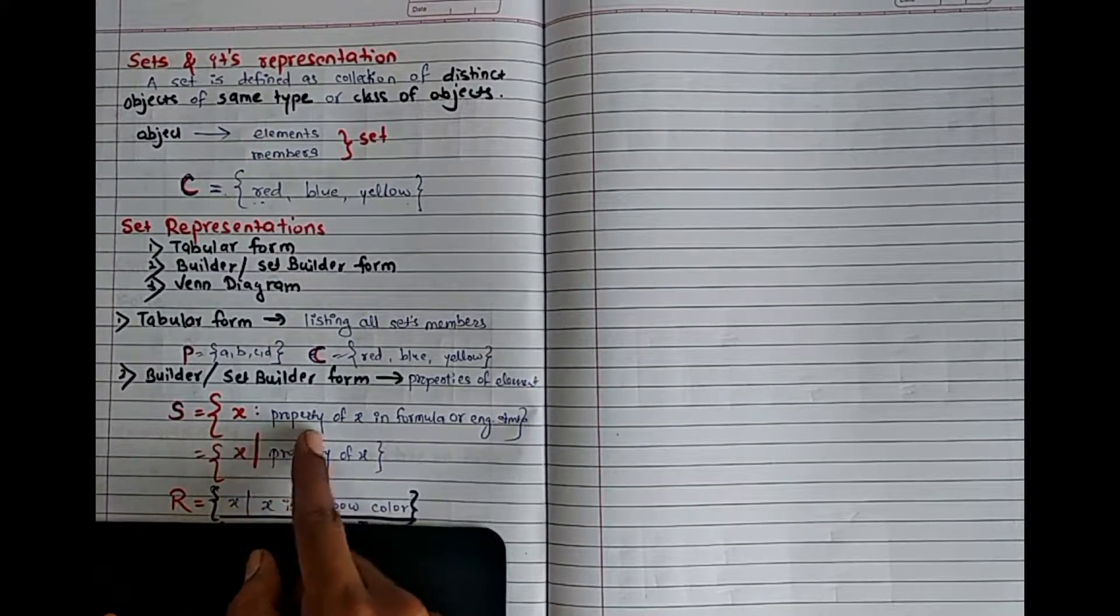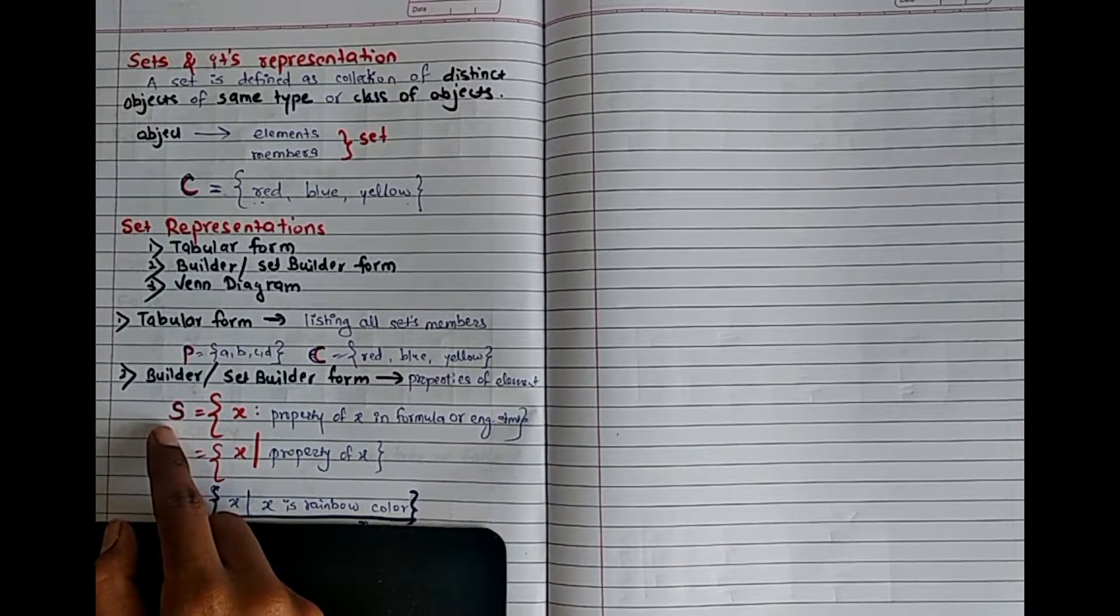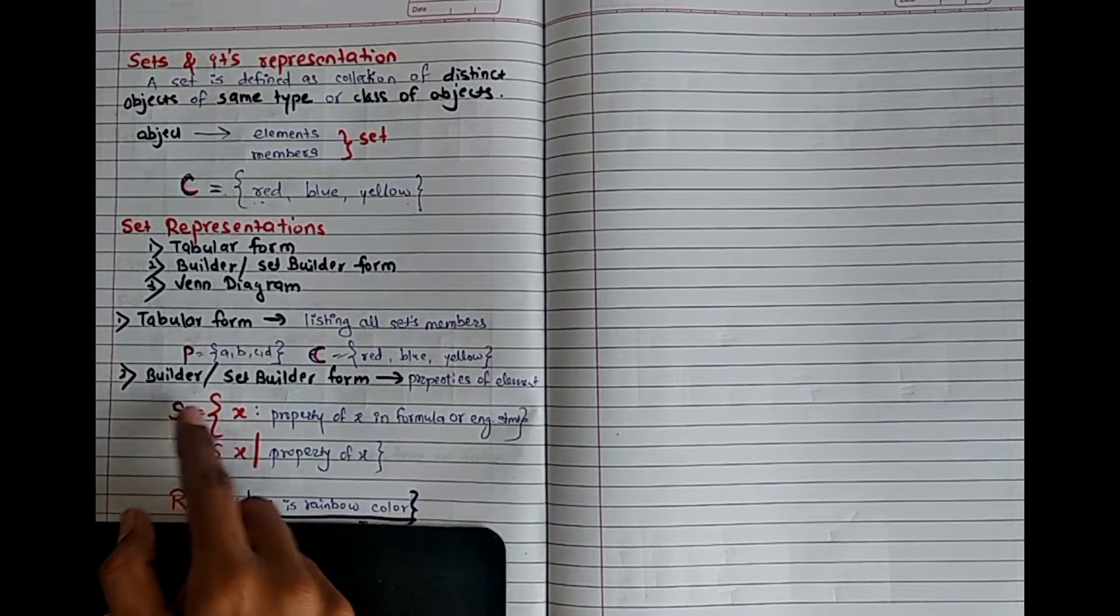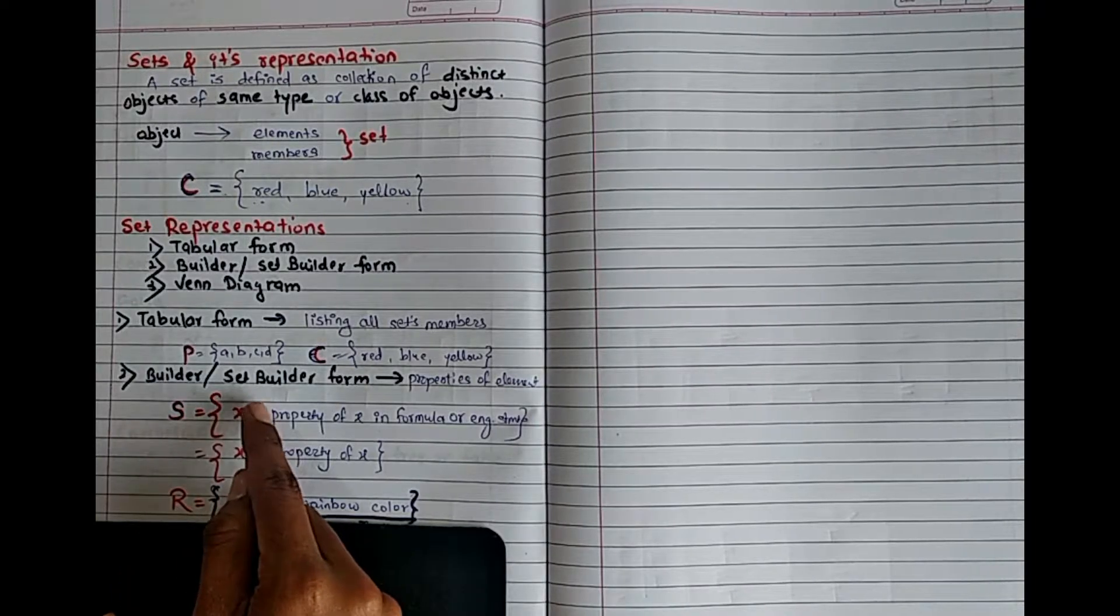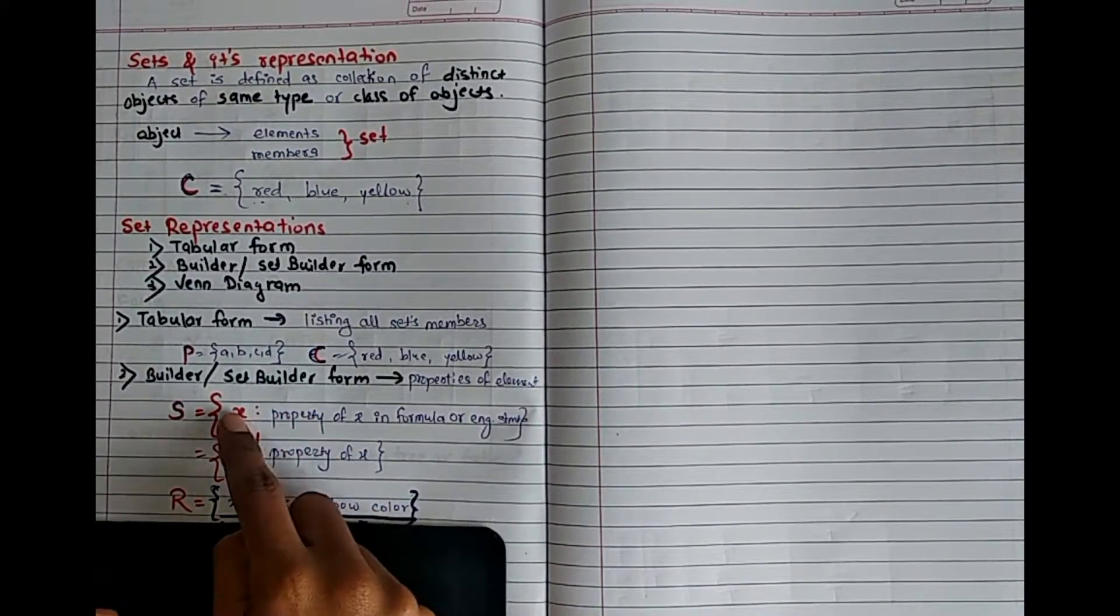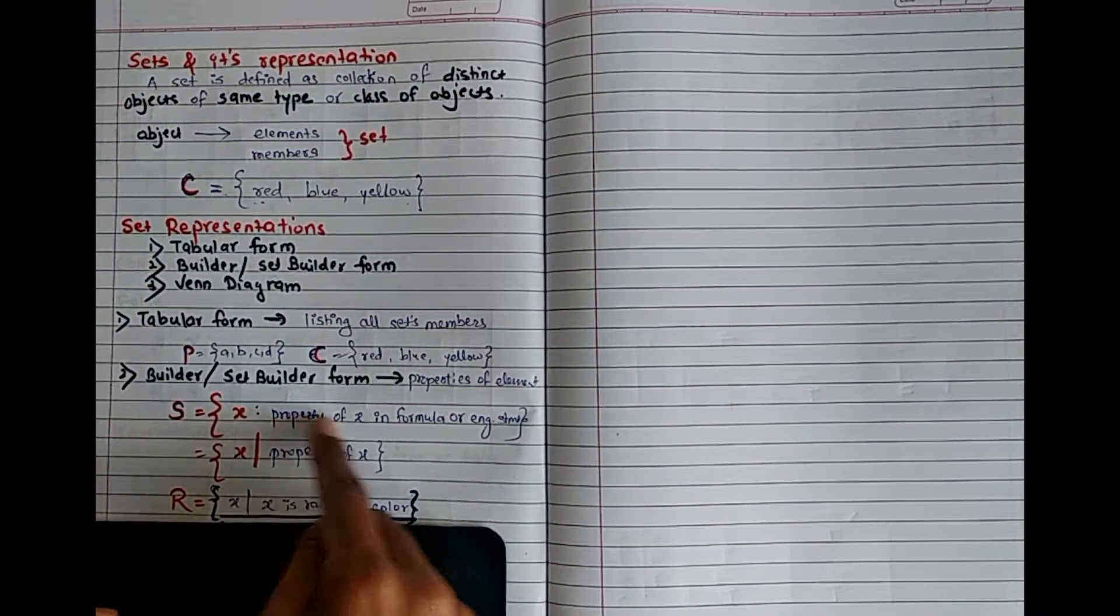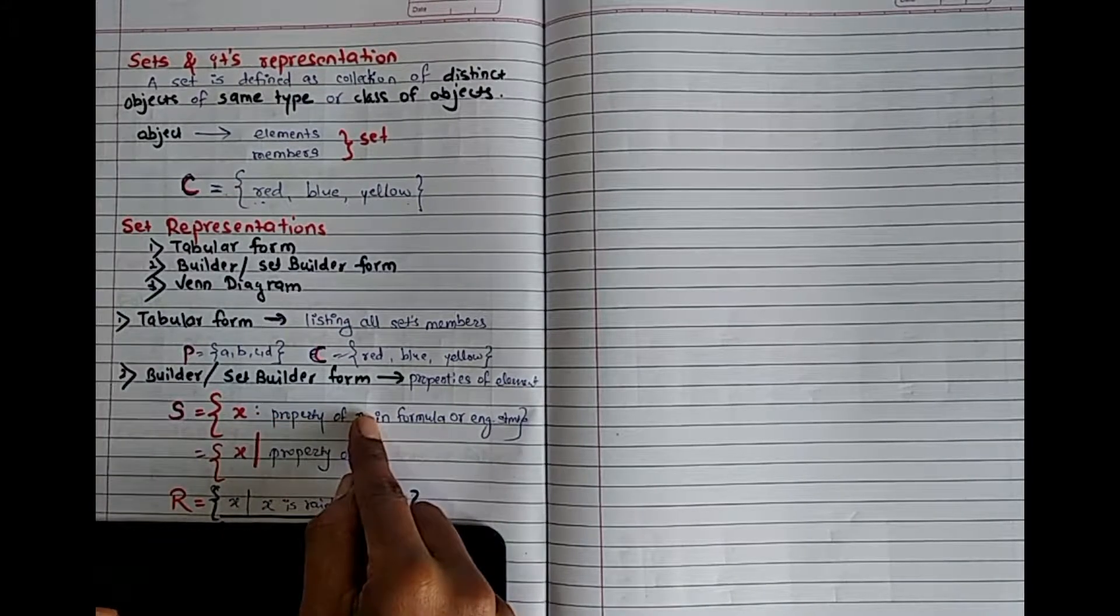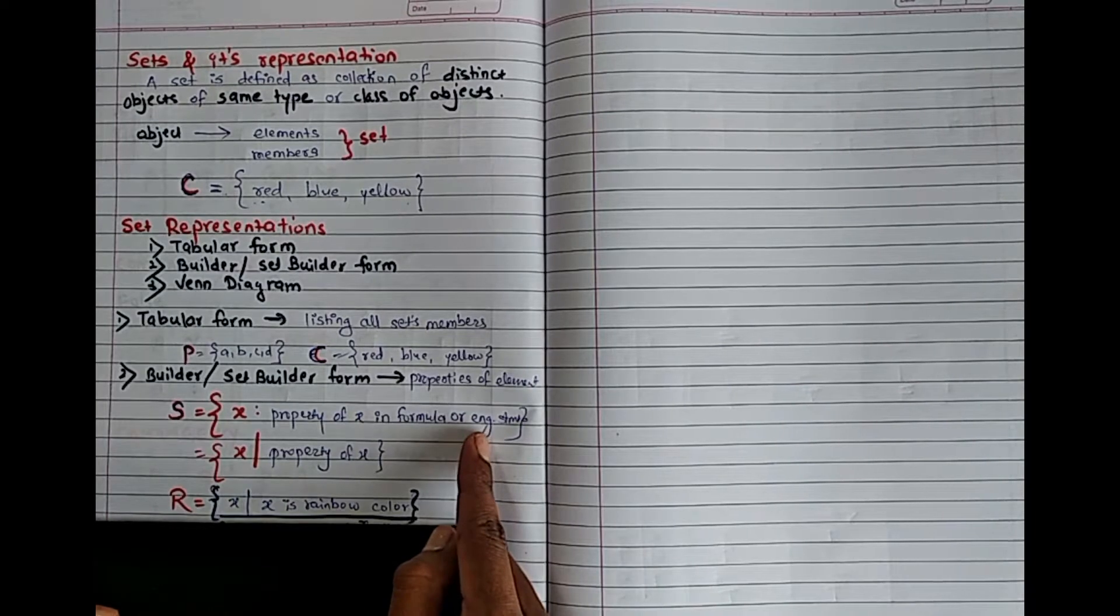So how do you write? If there is some element, like for example S is my set, and here I will write the set S in the set builder form as x such that - this is colon or inside - and I will write the property of x. That means x which is any element of my set. So I can write the property of x either in formula or in English statement. If you use it, it is called set builder representation.